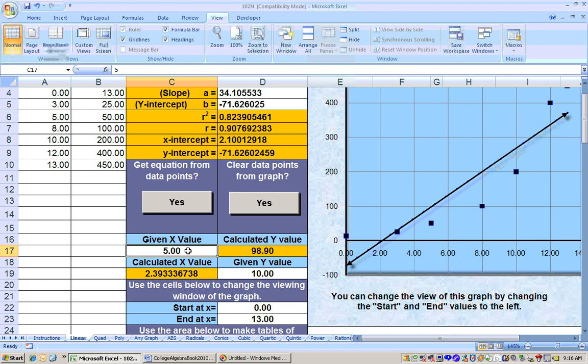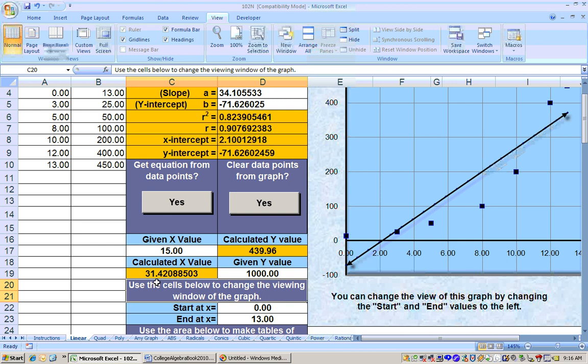The next problem asks, what's the speed in the year 2000? Well, 2000 is 15 years after the base year of 1985, so the speed would be 439.96 megahertz. And when will the speed be 1,000 megahertz? We'll put 1,000 in for y, and you get 31.42 years after 1985.